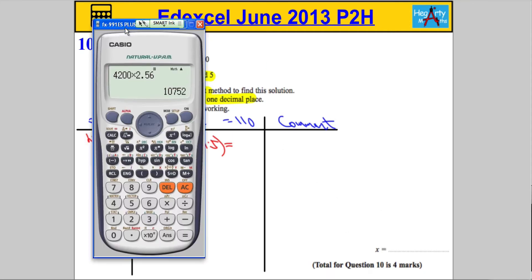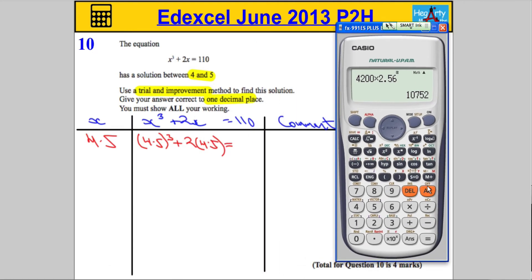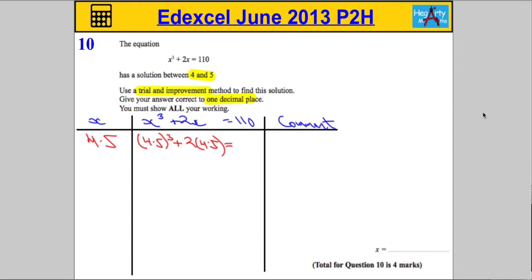So we get the calculator out. Calculator is going to be essential here. Let's just get this set up. So we're going to do 4.5³ and we're going to add two lots of 4.5. Let's see how that works out. Don't leave it as a fraction, let's turn it into a decimal. We get 100.125.